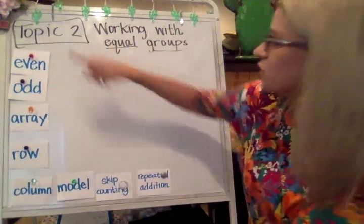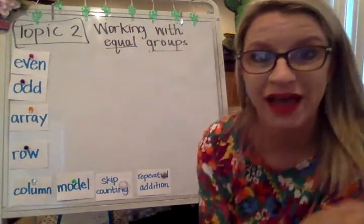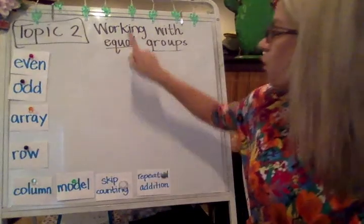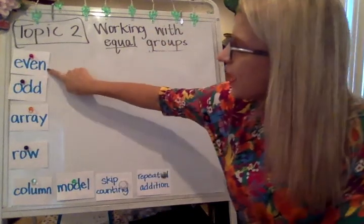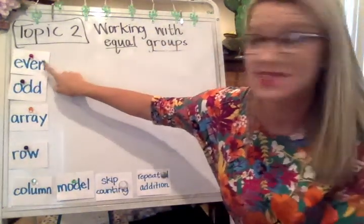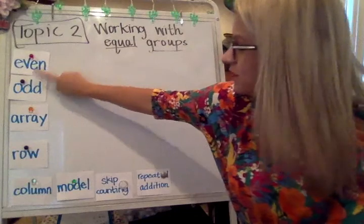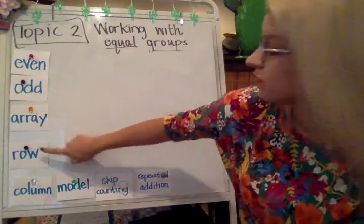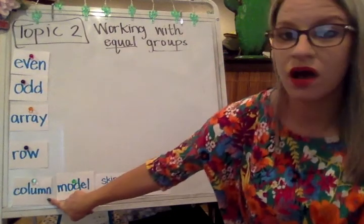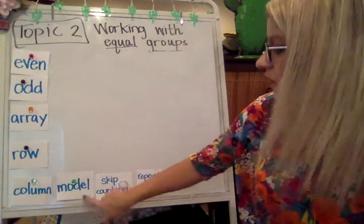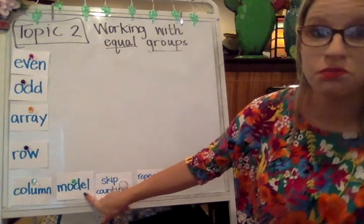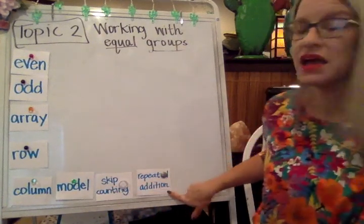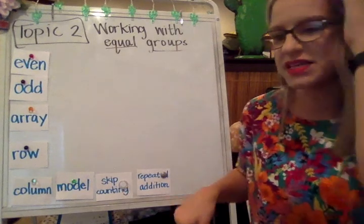Hi, we're on topic two. This is the vocabulary intro for working with equal groups. The terms we're going to be discussing: even, odd, array, row, column. We'll also be talking about how to model something, skip counting, as well as repeated addition.